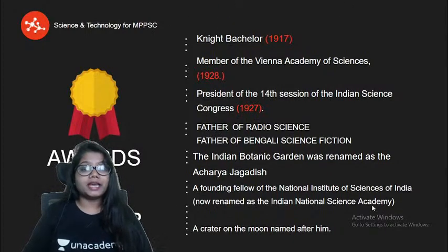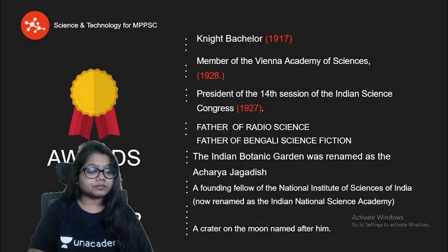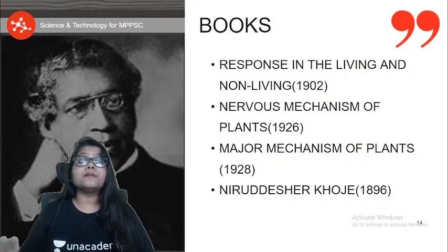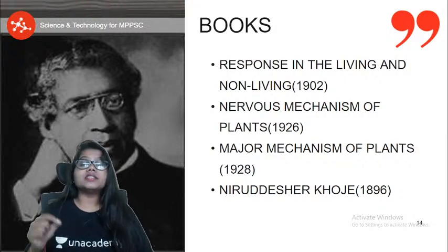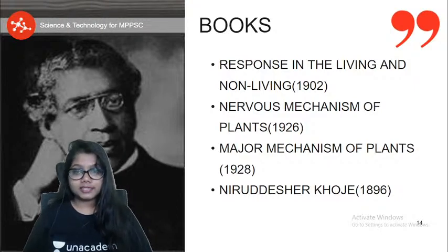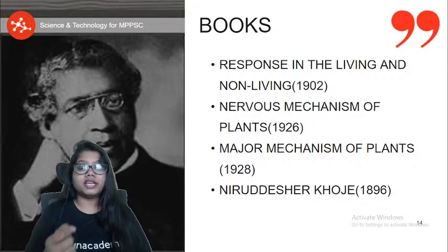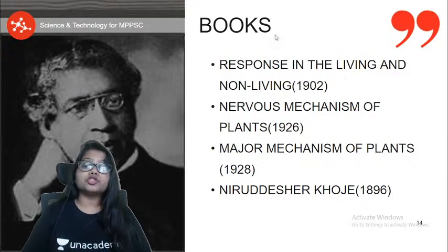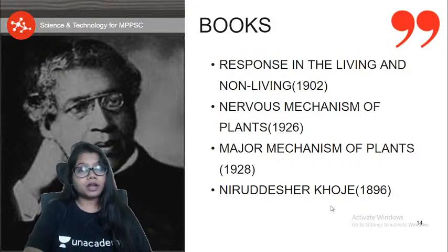These awards you must remember — he is called Father of Radio Science and Father of Modern Science. The Indian Botanic Garden was renamed in his honor as Acharya Jagdish Chandra Bose Indian Botanic Garden. He was a founding fellow of the National Institute of Science of India, now called the Indian National Science Academy. There is even a crater on the moon named after Jagdish Chandra Bose.